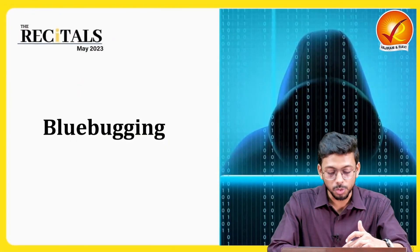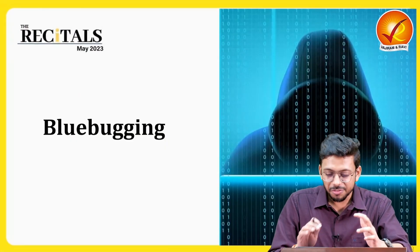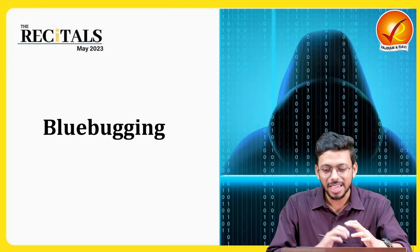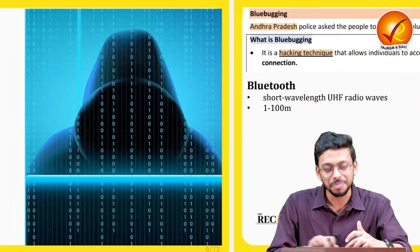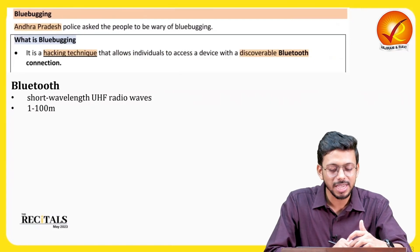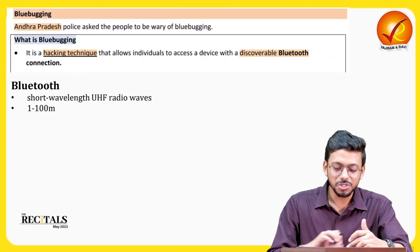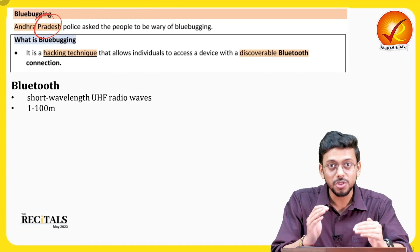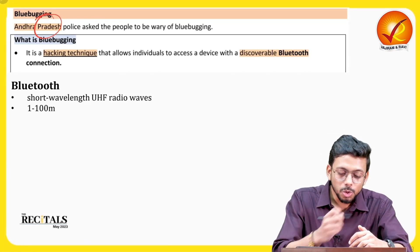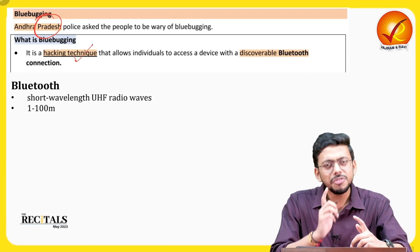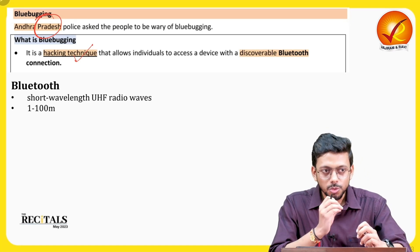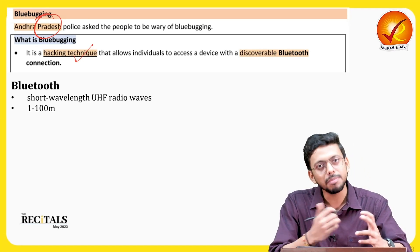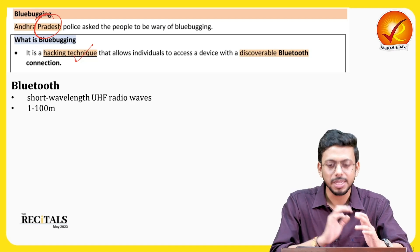Let us look at the topic of blue bugging. From the figure you can figure out it is something related to hacking and cyber crime. Blue bugging was in the news because Andhra Pradesh Police asked people to be wary of it. Blue bugging is a hacking technique in which Bluetooth is used to hack your data, find out your private data, steal it, and possibly sell it.